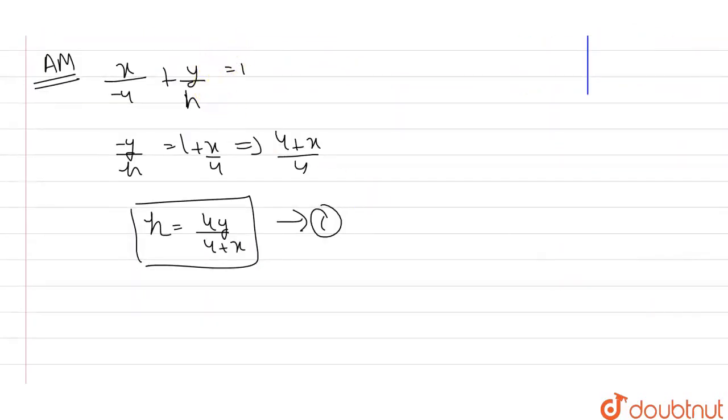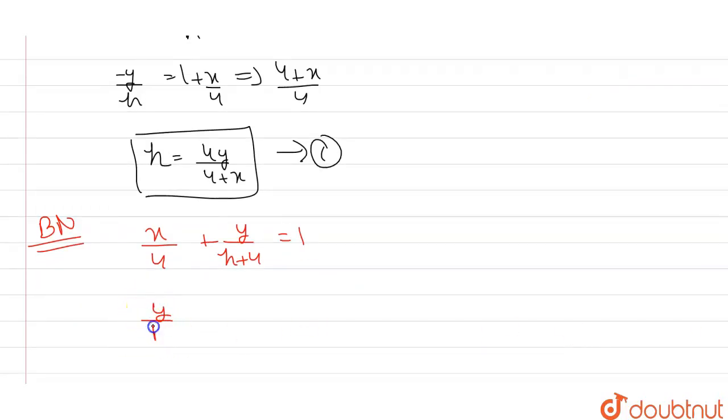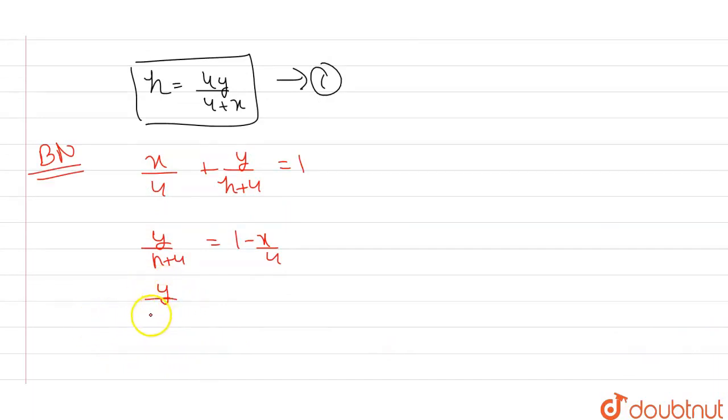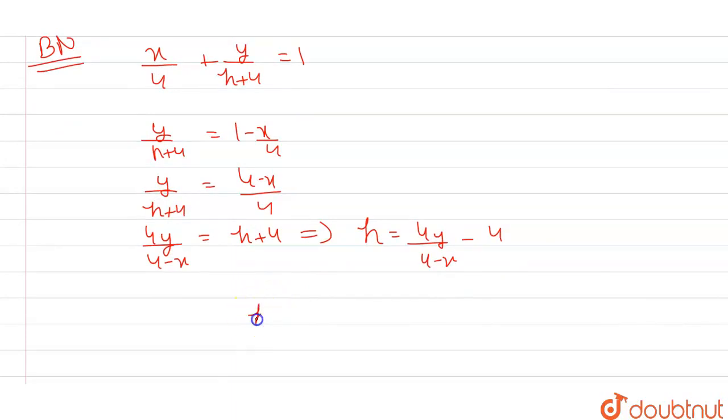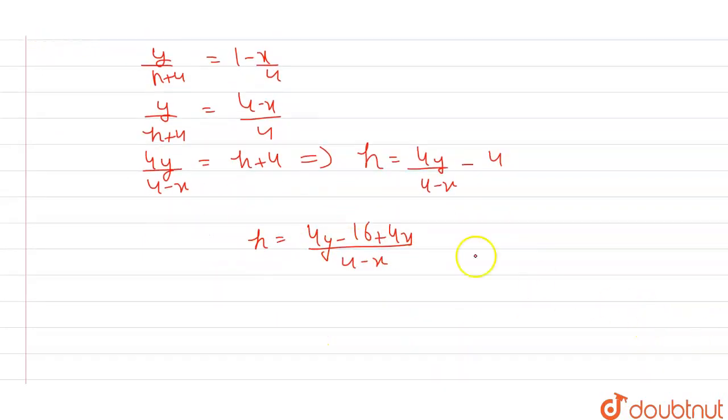Another line we have is BN. If I find the intercept of line BN, this becomes X/4 + Y/(h+4) = 1. We have to find the value of H. Using this equation, Y/(h+4) = (4-X)/4. After cross multiplying, the value of H will come out as (4Y - 16 + 4X)/(4-X).